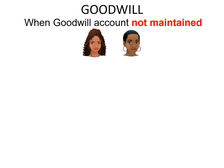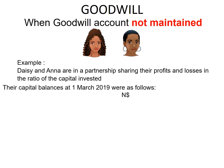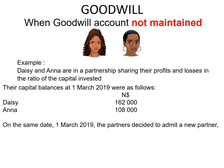Let's have a look at the following example when the Goodwill account is not maintained. Daisy and Anna are in a partnership sharing their profits and losses in the ratio of the capital invested. Their capital balances at the 1st of March 2019 were as follows: Daisy had a balance of $162,000 and Anna had a balance of $108,000. On the same date, the partners decided to admit a new partner, Chris, under the following conditions.